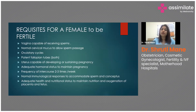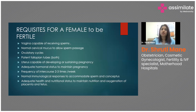What are the requisites for a female to gain a natural pregnancy? The vagina should be capable of receiving sperm — there should not be any Müllerian anomalies, absent vagina, or septate vagina. Normal cervical mucus to allow sperm passage is also required.